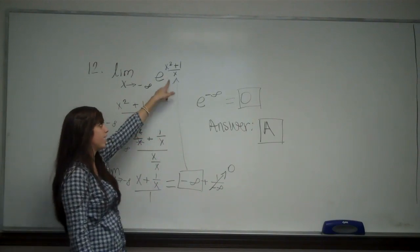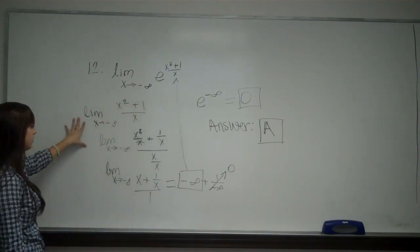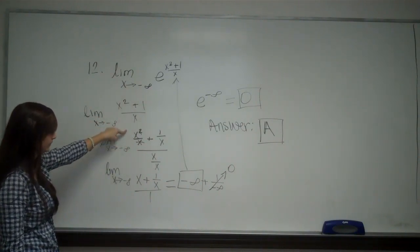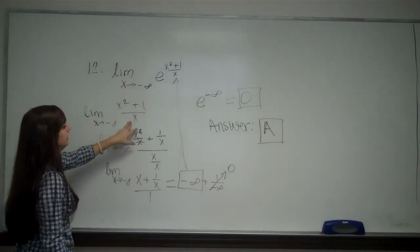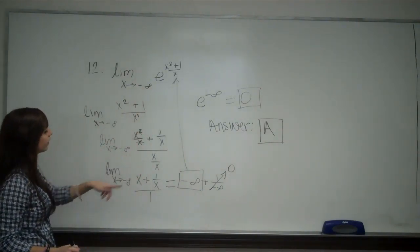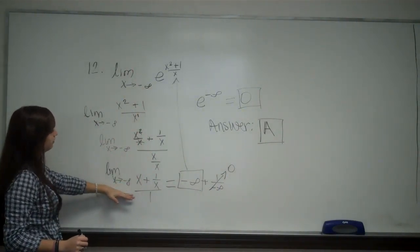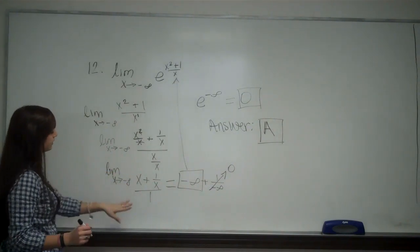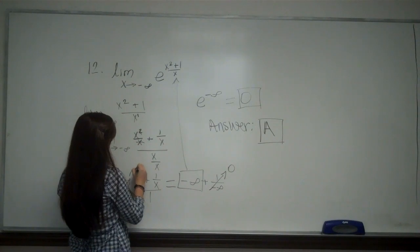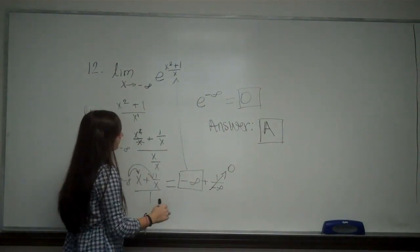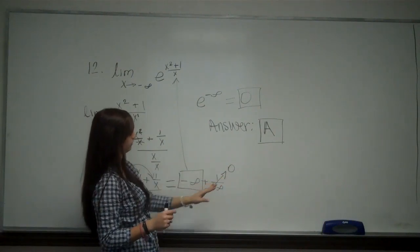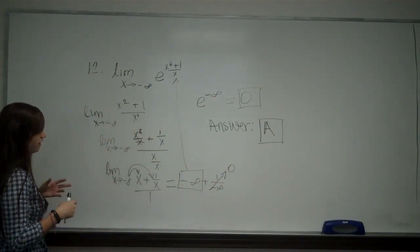All I did was evaluate just the exponent, the limit as x approaches negative infinity of my exponent. I divided by x to the highest degree of the denominator, which is to the power of 1. When I did that, I simplified to get x plus 1 over x over 1. When I plug in negative infinity to both of these, I get negative infinity plus 1 over negative infinity. This goes to 0, so all I'm left with is negative infinity.